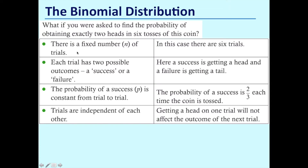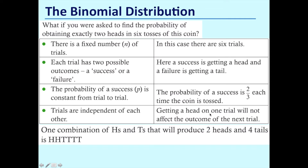To apply the binomial distribution, we need a fixed number of trials N — here we've got six trials, so that condition is satisfied. Each trial can only have two possible outcomes, a success or a failure — here a success is getting a head and a failure is getting a tail. The probability of success is constant from trial to trial — here it is two-thirds. And trials are independent of each other — getting a head is not going to influence the outcome of the next coin toss. So we've got a situation where we can use the binomial distribution.